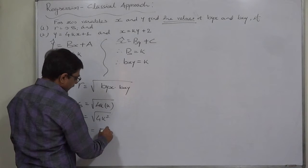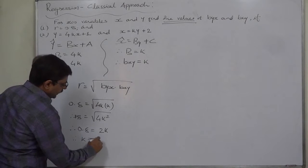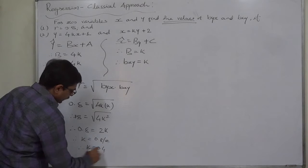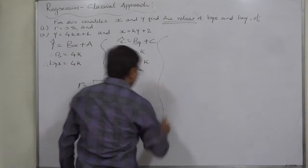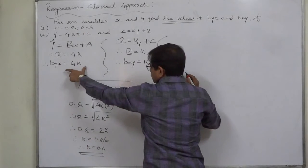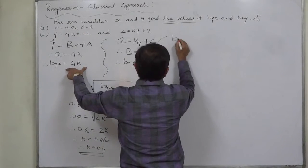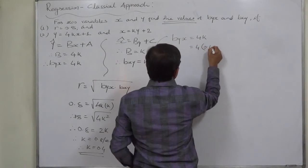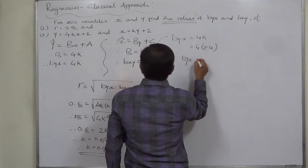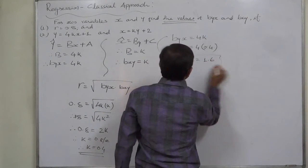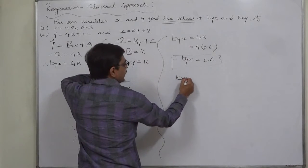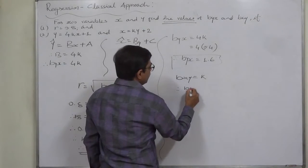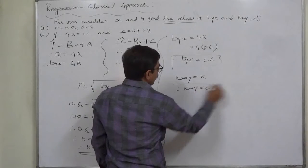Therefore k = 0.8 ÷ 2 = 0.4. Now byx = 4k = 4(0.4) = 1.6, and bxy = k = 0.4.